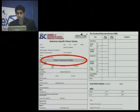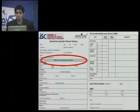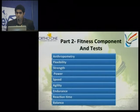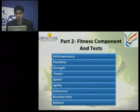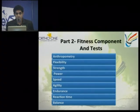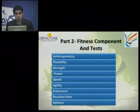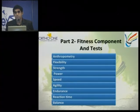Moving to the fitness components. The fitness component test will include nine of them, and we will be doing a few today. The first is anthropometry, second is flexibility, third is strength, then power, speed, agility, endurance, reaction time, and balance.